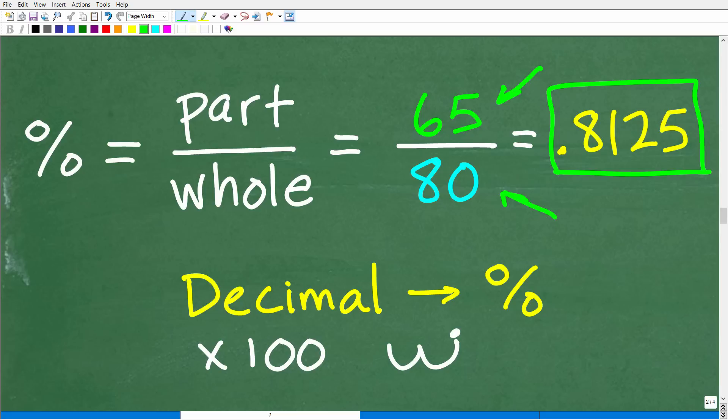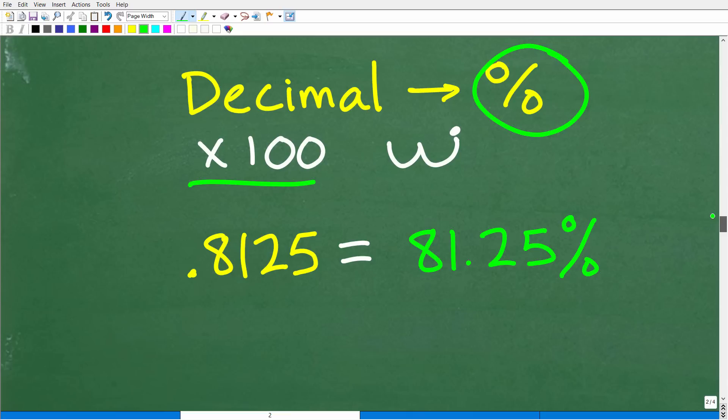All right, so this is a decimal. So to go from a decimal to a percent, what we need to do is multiply by 100 or move the decimal point over two places to the right. All right, so let's do that. And here 0.8125 is equal to what? Well, just move that decimal point over two places to the right. Again, that's the result of multiplying by 100. And you can see our answer is 81.25%.